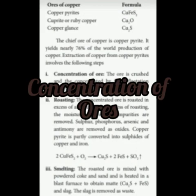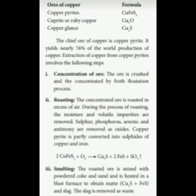Today we are going to see about the extraction of copper. Copper is found in native state as well as in the combined state. Copper found in the earth's crust as a free form is called native state, and in the combined form, copper can mix with oxygen or sulfur to form a compound. The symbol of copper is Cu and atomic number is 29.